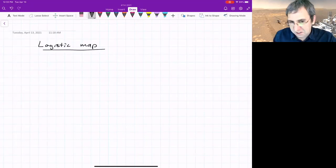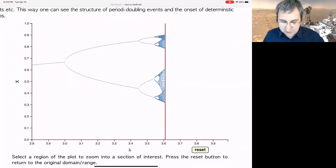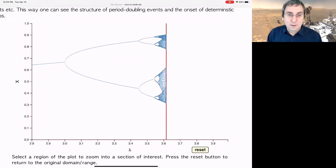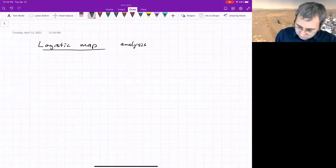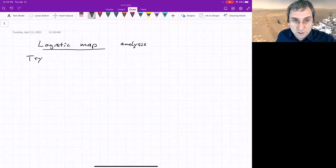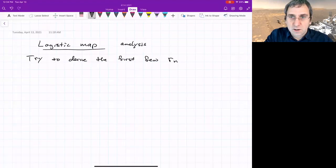We're going to do some logistic map fixed point analysis and calculate the first few of these period doubling bifurcation points. The first period doubling is at three, and we're going to try to derive the first few r_n, the parameter values where we get period doubling.